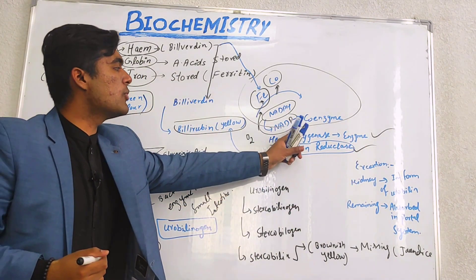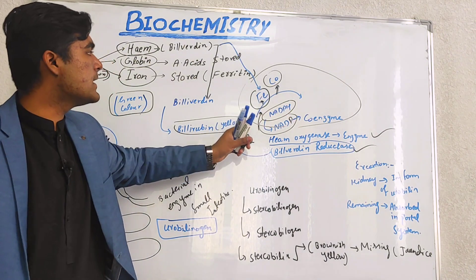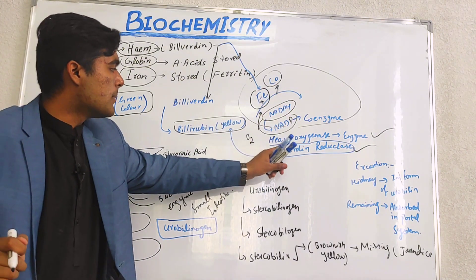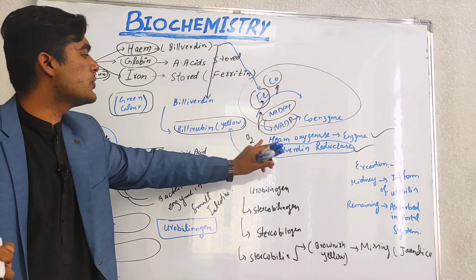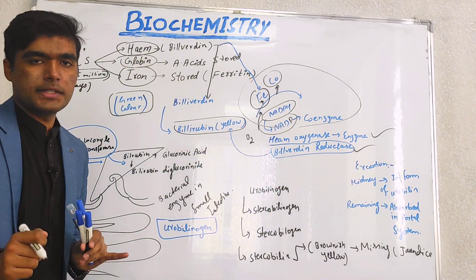Biliverdin is then converted into yellow colored pigment bilirubin using the enzyme bilirubin reductase. First, we use heme oxygenase to convert NADPH into NADP, then biliverdin forms and biliverdin is converted into bilirubin using bilirubin reductase enzyme.